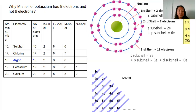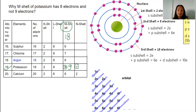Welcome to the second part of the video. Although the M-shell has the capacity to hold 18 electrons, in the case of potassium there are only eight electrons in the M-shell — not nine. The last electron moves to the N-shell. In order to understand this, we have to understand sub-shells.